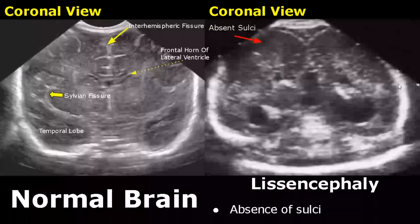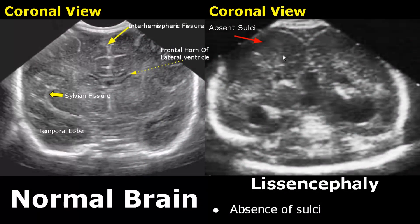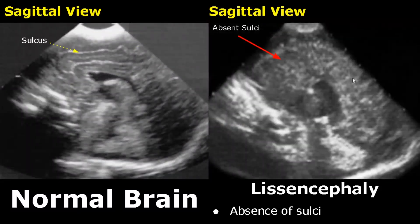Lissencephaly is a condition in which there is absence of brain sulci — it is also called smooth brain. In this sagittal view of lissencephaly, we do not see the normal brain sulci like we see in the normal image.